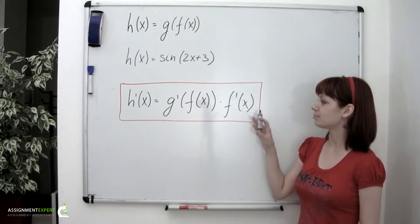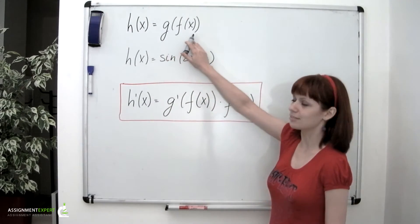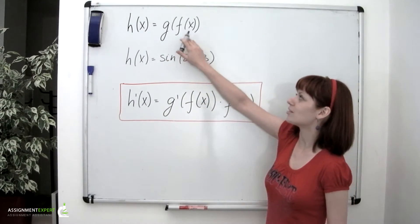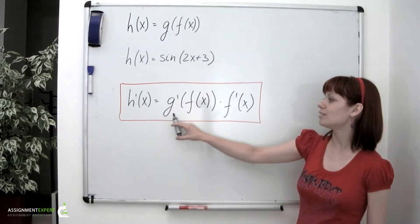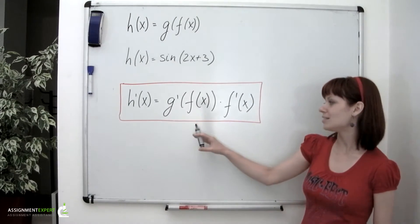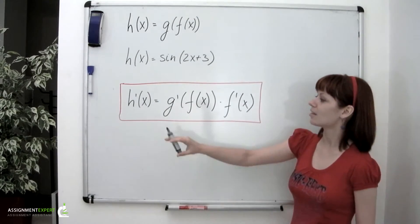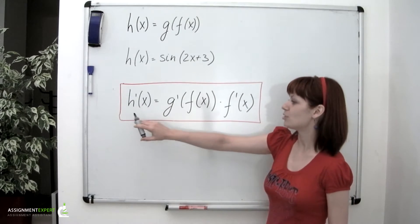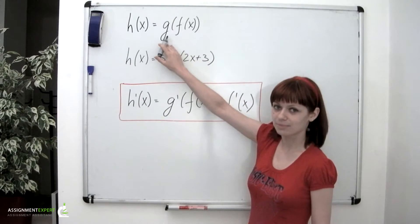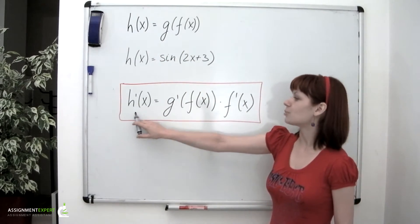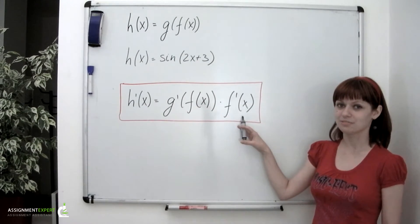Let's discuss this formula. So h of x is a composition of two functions, g and f. f of x is the inside function and g is the outside function. So h prime of x equals derivative of the outside function, multiplied by the derivative of the inside function. So one more time. h of x is a composite function and contains two functions, g and f. f is the inside function and g is the outside one. Derivative of this function equals derivative of the outside function evaluated at the inside function, multiplied by derivative of the inside function.